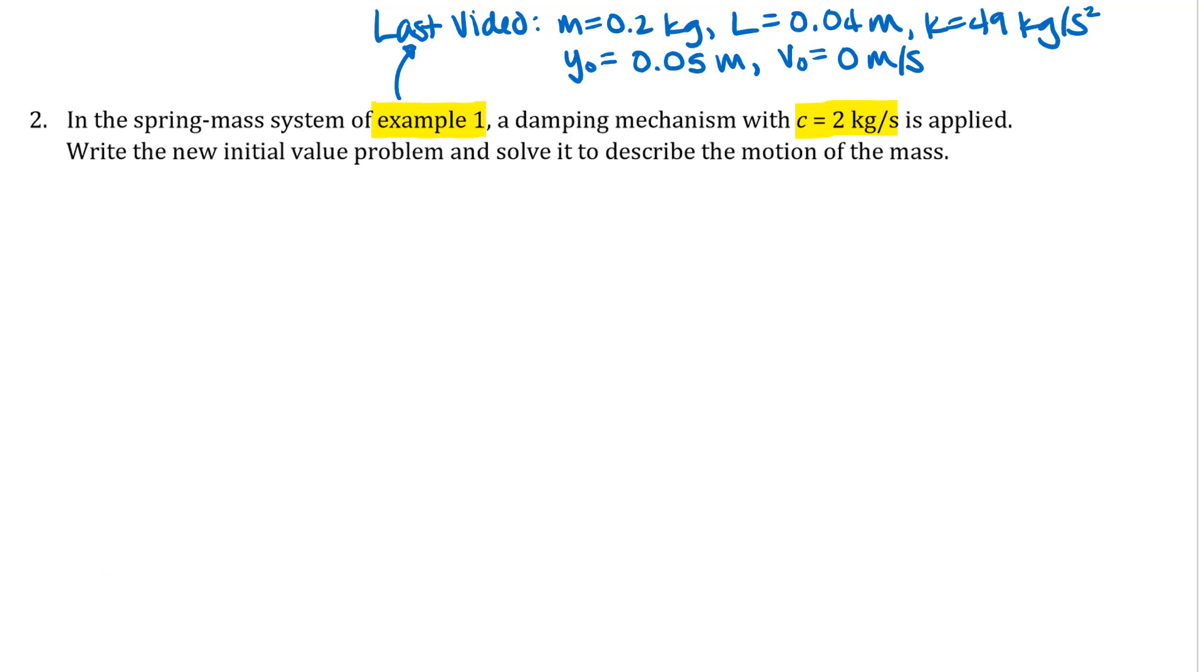And that's what we should expect to get when we actually find this solution. So the first thing we want to do here is write down the differential equation. That's pretty straightforward. We're just going to use the model M Y double prime plus C Y prime plus K Y equals 0 that we discussed in the last video.